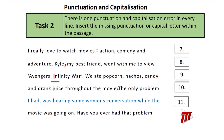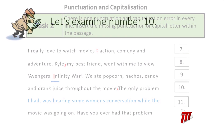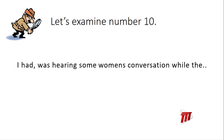Number eleven: 'I had was hearing some women's conversation.' There's a missing apostrophe — 'women's' requires an apostrophe S to show possession. This is so easy for you — excellent work, students.